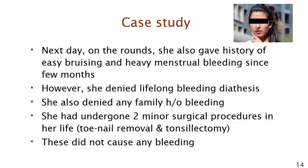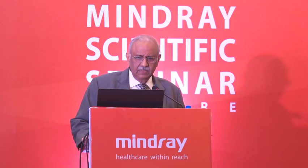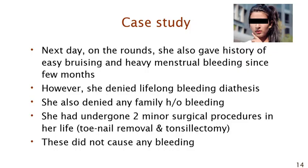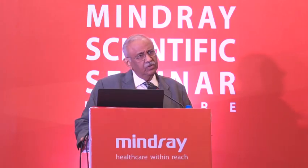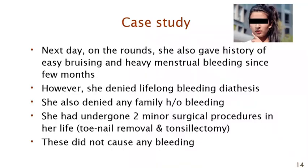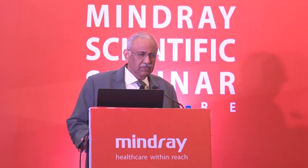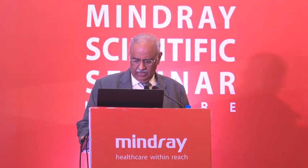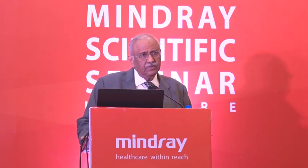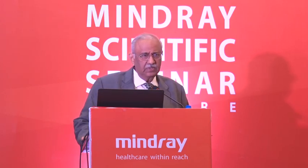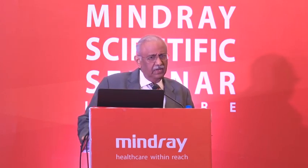On the next day's rounds, she gave history that she has easy bruising and heavy periods for the last few months, but she denies being a lifelong bleeder and denies any family history of bleeding. She had also undergone two minor surgical procedures — a toenail removal and a tonsillectomy — both uneventful. So: sudden onset of gum bleeding, background of arthralgia and oral ulcers, no bleeding history despite surgical procedures, raised PTT, and everything else normal.